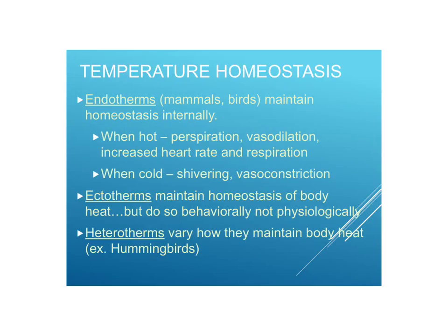Temperature homeostasis is really important in animals. We have three different ways of keeping temperature constant: endotherms, ectotherms, and heterotherms. Endotherms, such as mammals and birds, maintain homeostasis internally. When we're hot we perspire; we have vasodilation, which increases the diameter of blood vessels in the extremities like the arms, legs, fingers, and toes — vasodilation releases more heat to the environment. We also increase heart rate and respiration. When we're cold there's shivering, which increases core temperature a little, and vasoconstriction, which constricts blood vessels in the extremities and brings more blood to the center of the body to keep warmth where it's important.